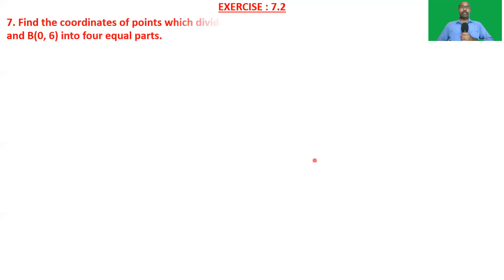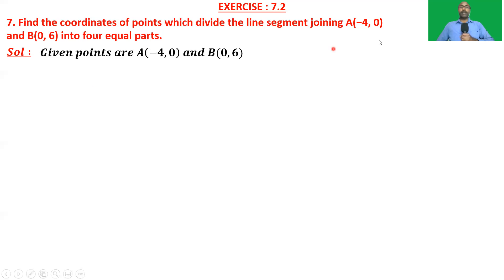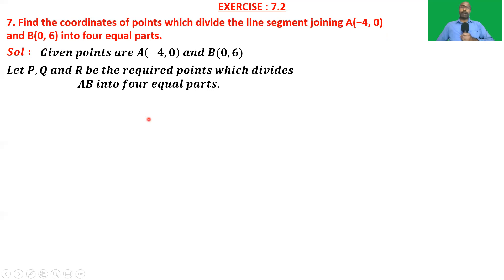So first, in exercise 7.2, problem 7: find the coordinates of points which divide the line segment joining A(-4, 0) and B(0, 6) into four equal parts. Here the ends of the line segment A and B are given. We have to find three points P, Q, and R which divide the line segment AB into four equal parts.